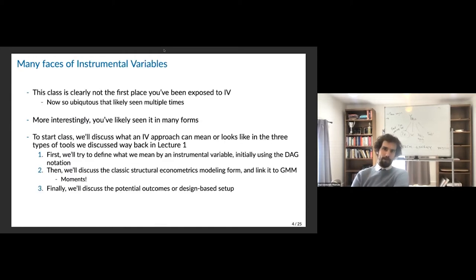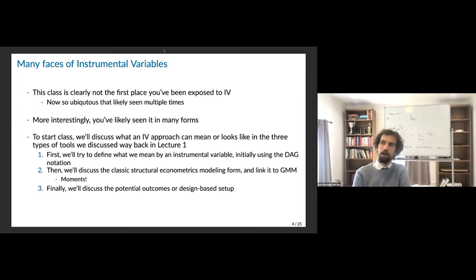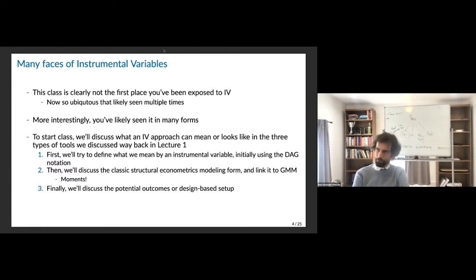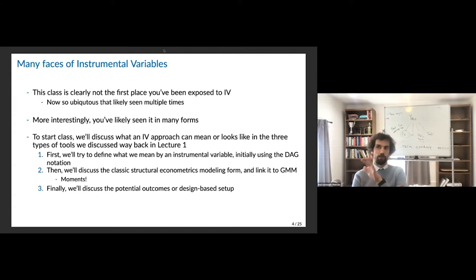Presumably this is not the first time you've heard of IV — it's ubiquitous as a research design. When I was in college this was obviously around, but the modern research-design-focused form of it was really only starting to take off. What I'm going to highlight is three different ways of thinking about IV. First, I want to define what an IV is. It's kind of incredible — you can read a bunch of things about instrumental variables in the Journal of Economic Perspectives and it's such a ubiquitous tool that defining what we mean by it is almost taken for granted.